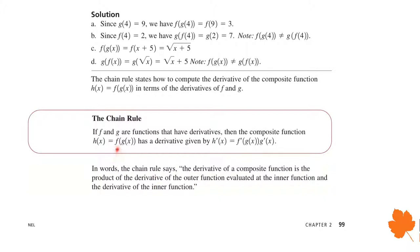F is referred to as the outer function and G is the inner function. The derivative of a composite function is the product of the derivative of the outer function evaluated at the inner function, and the derivative of the inner function.